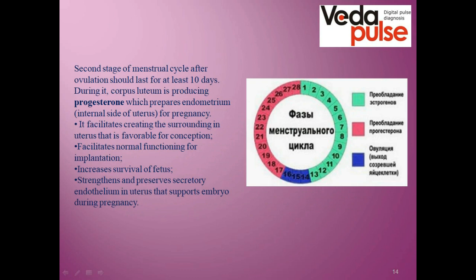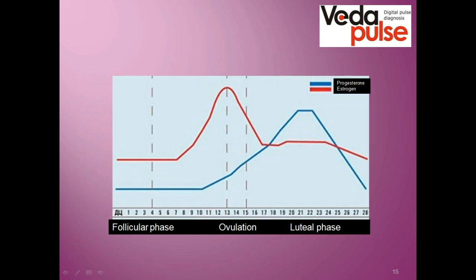Looking at the phases once more: the green represents estrogen in the follicular phase, then around the 13th–14th day is ovulation when the ovum is released — this period is favorable for pregnancy. The second phase is progesterone-dominant. If pregnancy doesn't happen, a deficiency of pituitary and ovarian hormones begins, the endometrium layer is rejected, and this results in bleeding. On the graph you can see the influence and work of hormones at different stages — red is estrogen and blue is progesterone.